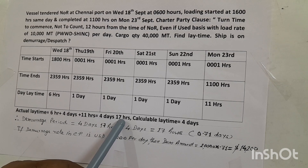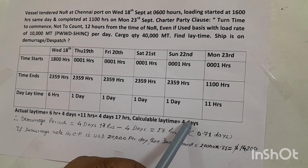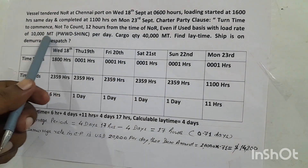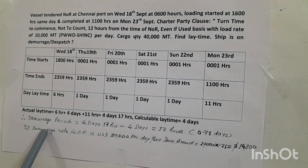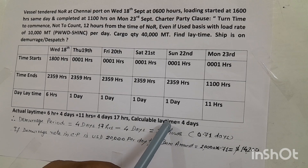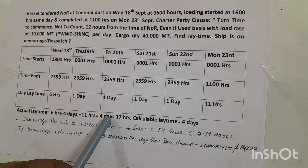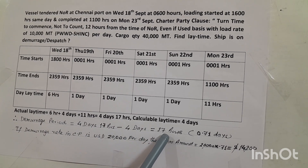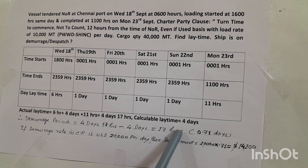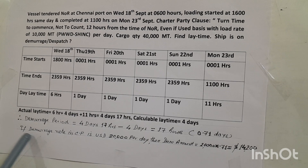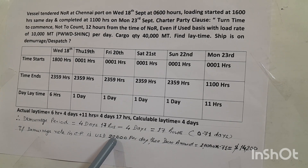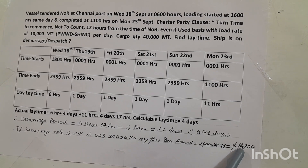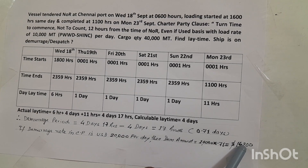That gives a total actual time of 4 days and 17 hours. The calculable laytime is 40,000 divided by 10,000 equals 4 days. The vessel took 4 days 17 hours against an agreed time of 4 days, so it is demurrage. Demurrage period is 17 hours, which equals 17/24 = 0.71 days. At a demurrage rate of $20,000 per day, the demurrage amount is $20,000 × 0.71 = $14,200, payable by the cargo owner to the ship owner.